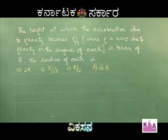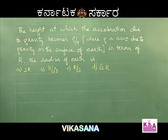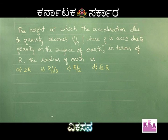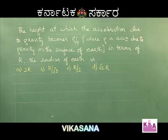The next problem: the height at which the acceleration due to gravity becomes g by 9, in terms of R (the radius of earth). Options: A — 2R, B — R by root 3, C — R by 2, and D — root 2 R.